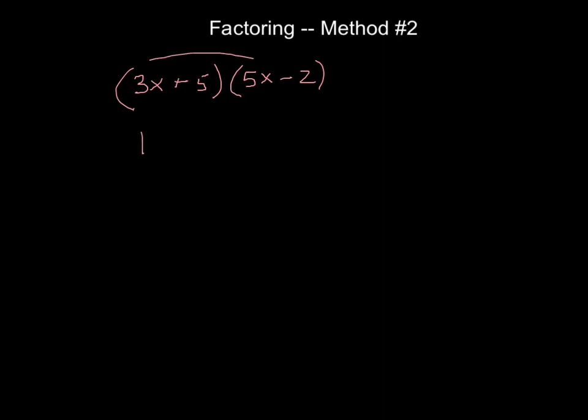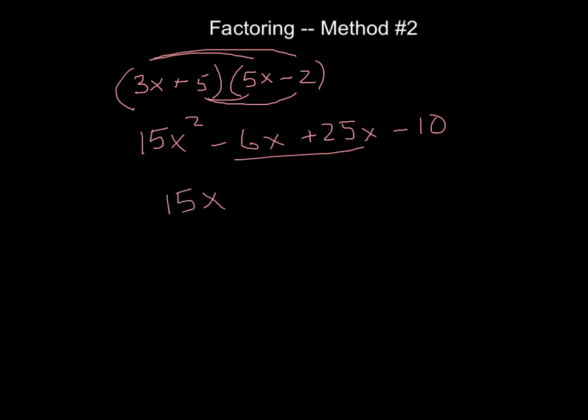3x times the 5x gives me 15x². 3x times the negative 2 gives me negative 6x. 5 times the 5x gives me 25x positive. And then finally, the 5 times the negative 2 gives me a negative 10. And then typically we combine our two like terms. So if we were multiplying something out, we have here this particular trinomial once we've combined the two like terms. Going from here to here is called multiplying or sometimes foiling. What we're doing when we factor is we're taking something given to us in this form and we're reversing back to the form that we had before somebody multiplied.